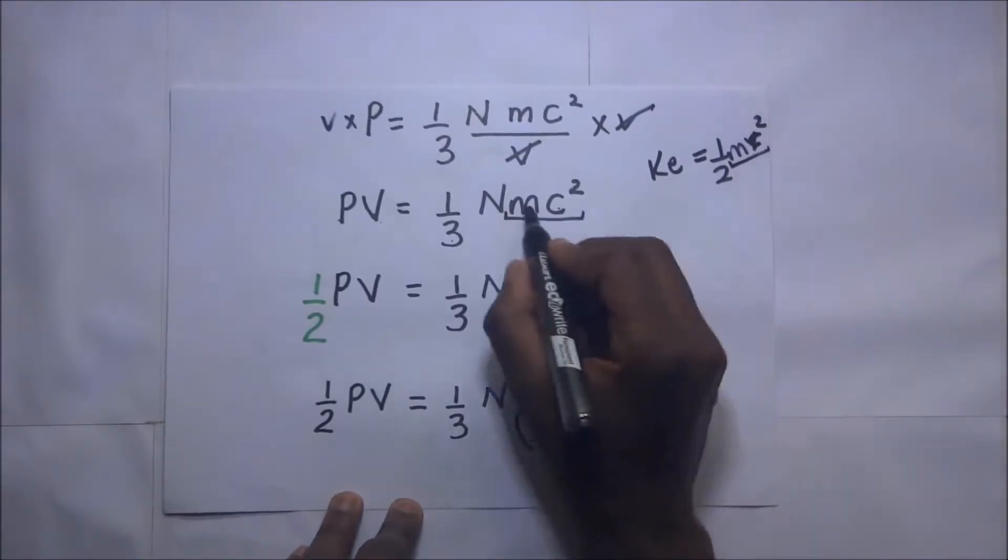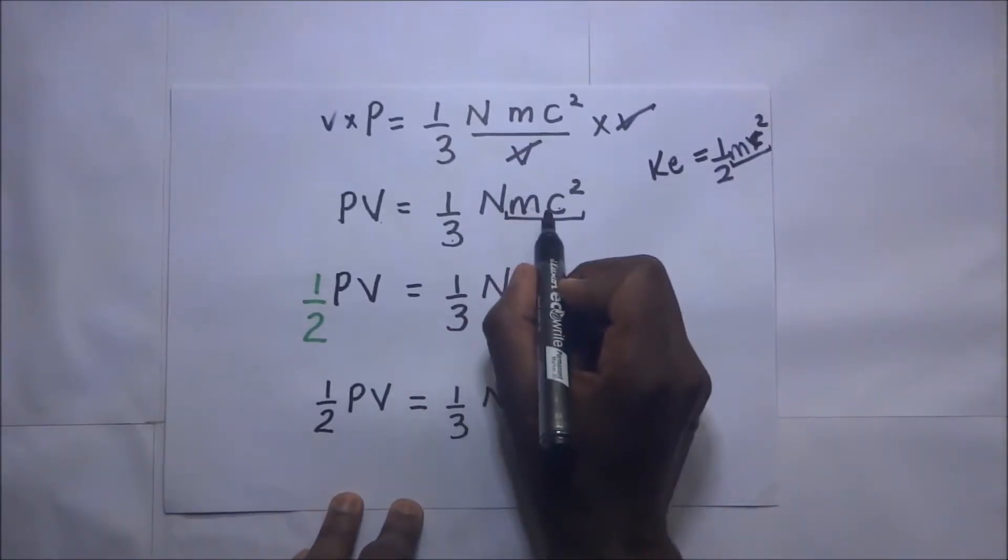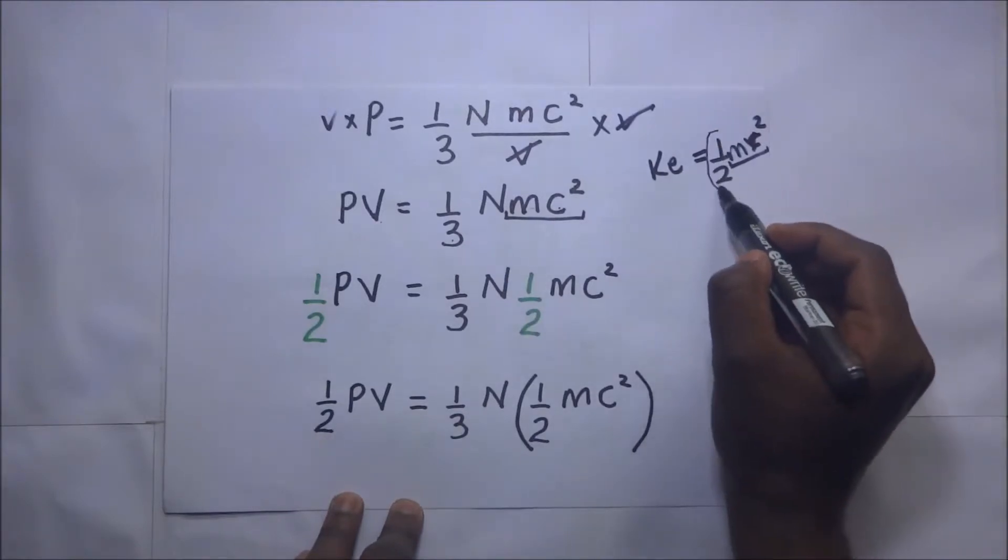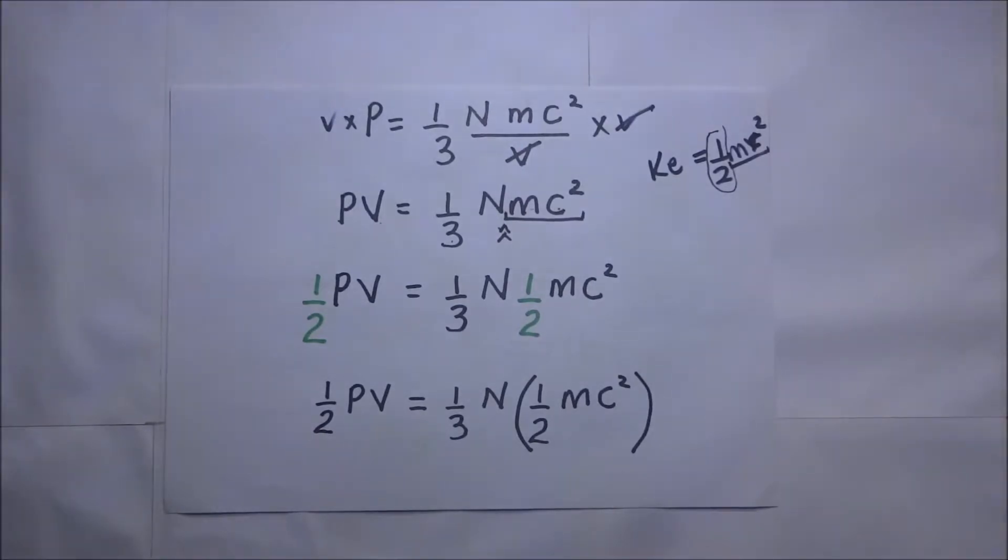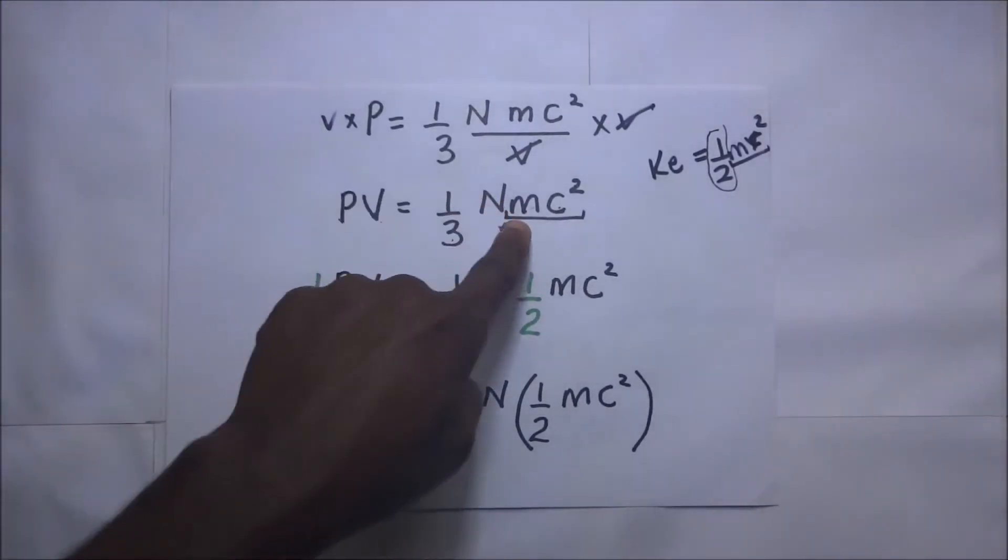So we have one-half M c squared. To make this thing look like kinetic energy, it means we are going to introduce this one-half right there. And that is what we have done in our green ink right here.